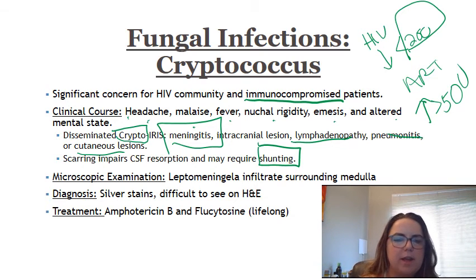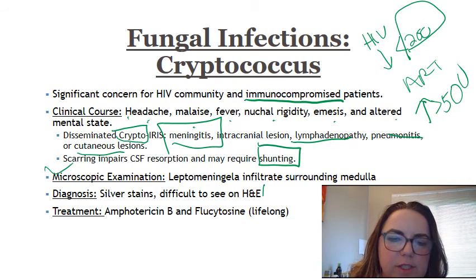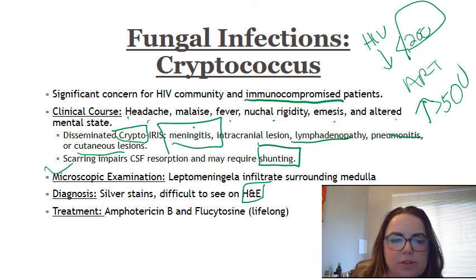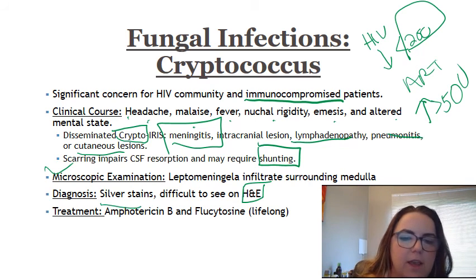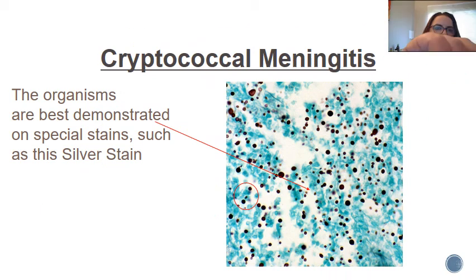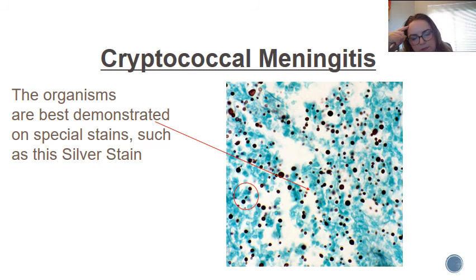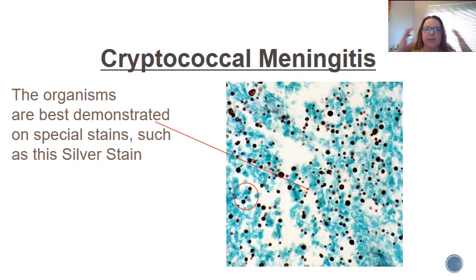When we are looking for Cryptococcus, you can't just use a typical H&E stain — it's cryptic, it's hard to find. You're going to want to use silver stain, and you can treat it with Amphotericin. The organisms are best demonstrated on special stains such as these silver stains, which you can see here. So cryptococcal meningitis can present as fulminant infection in the brain, disseminated infection, or CNS IRIS as a result of it. That's part of the reason why, in the HIV community, this one is a particularly dangerous pathogen to encounter.